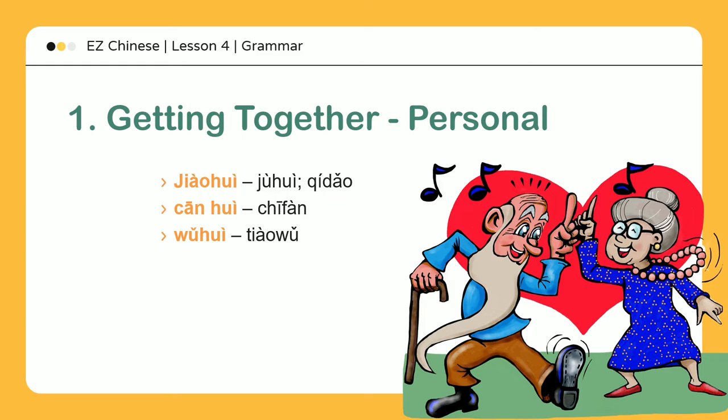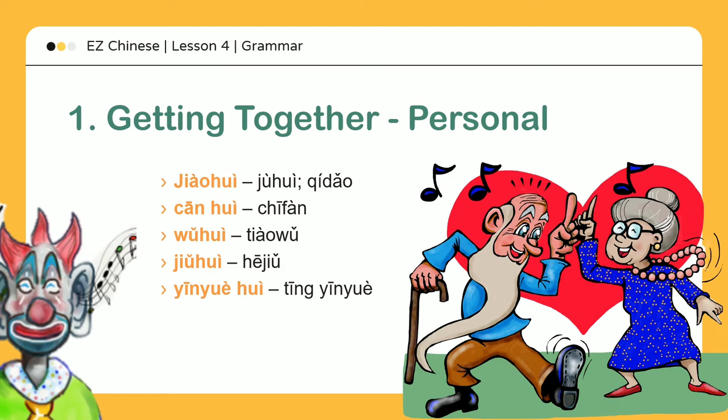酒会: 喝酒 — Cocktail party. Get together to drink socially. 音乐会: 听音乐 — Concerts. Specifically meeting to listen to a musical performance.